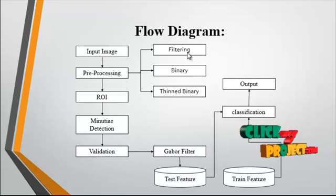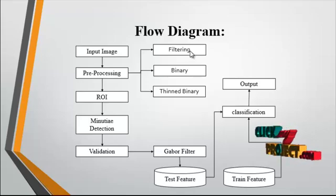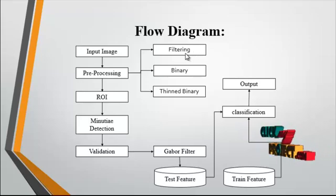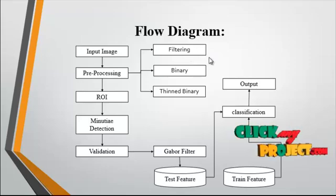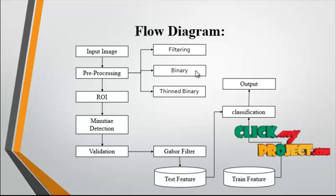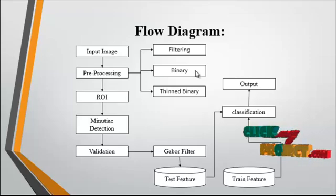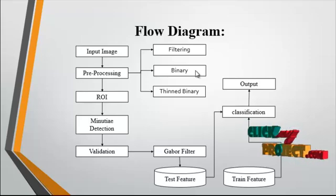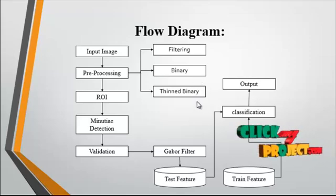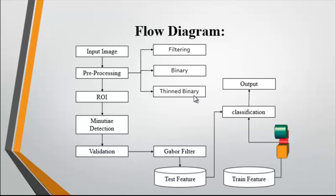In the filtering step, we filter the noise from the image. For removing the noise we use the median filter. After the filtering process, binary conversion is undertaken. In binary conversion, the image is converted into binary format — that is, the image has only two values: 0s and 1s. The 0s represent the black areas and the 1s represent the white areas.